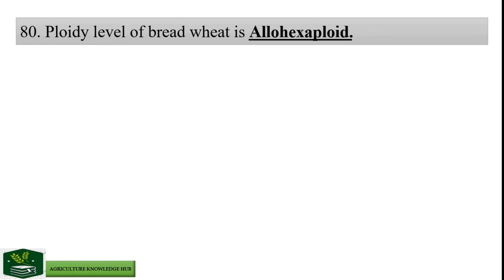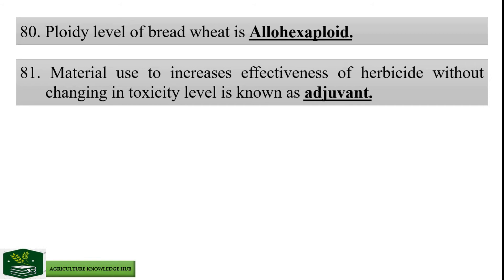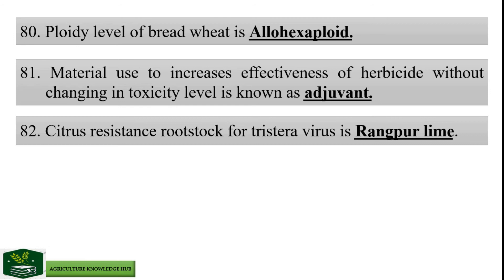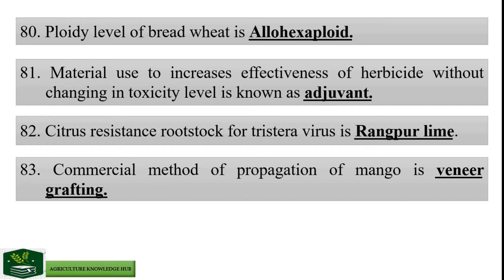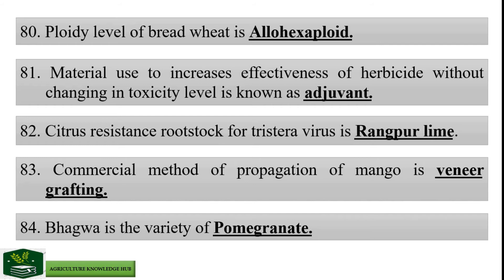Ploidy level of bread wheat is allo-hexaploid. Material used to increase effectiveness of herbicide without changing toxicity level is known as adjuvant. Citrus-resistant rootstock for tristeza virus is Rangpur lime. Commercial method of propagation of mango is veneer grafting. Bhagwa is a variety of pomegranate.